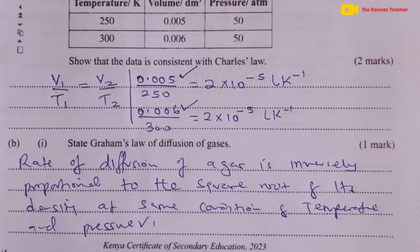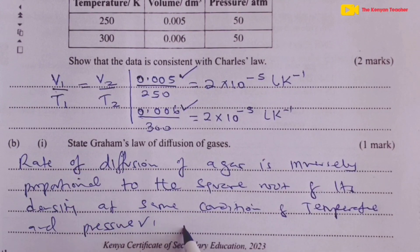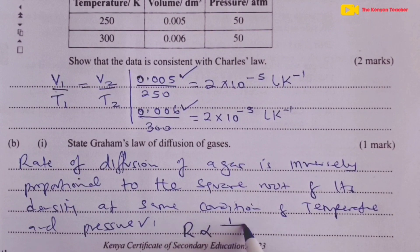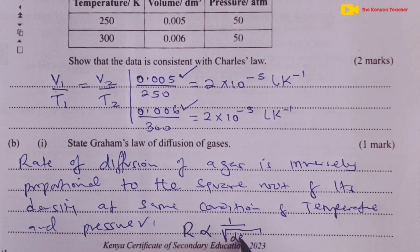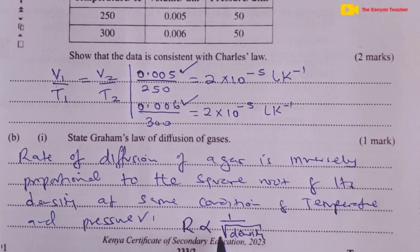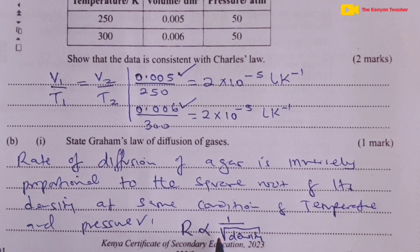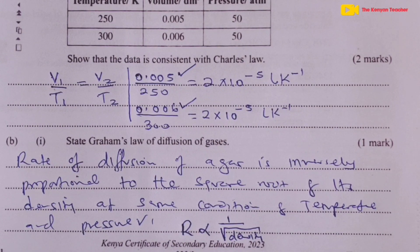This earns candidates the one mark assigned. The mathematical relation — rate is inversely proportional to the square root of density — was also accepted. Either the statement or the mathematical representation would score for that section. We then move to part B Roman 2.